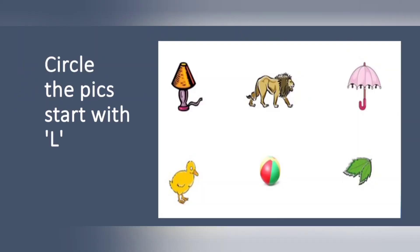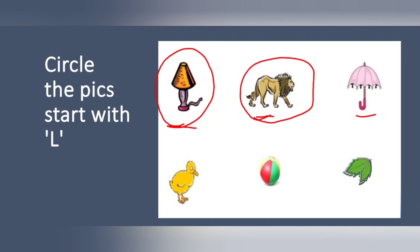Circle the picture that starts with L. What is this? L for lamp — circle. L for lion — circle. This is umbrella — U, not L. This is duck — D. This one is ball — B. This one is leaf — leaf starts with L, circle.